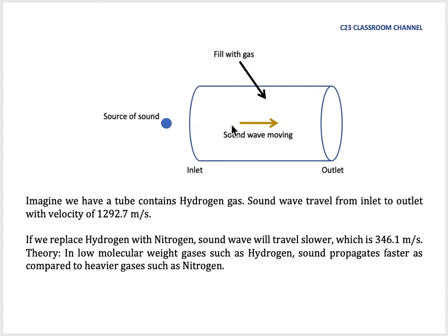According to our previous calculation, if the gas here is hydrogen, sound could travel from inlet to outlet with a speed of 1,292.7 m/s. If we change hydrogen in this tube with nitrogen, we find that the sound wave travels slower.